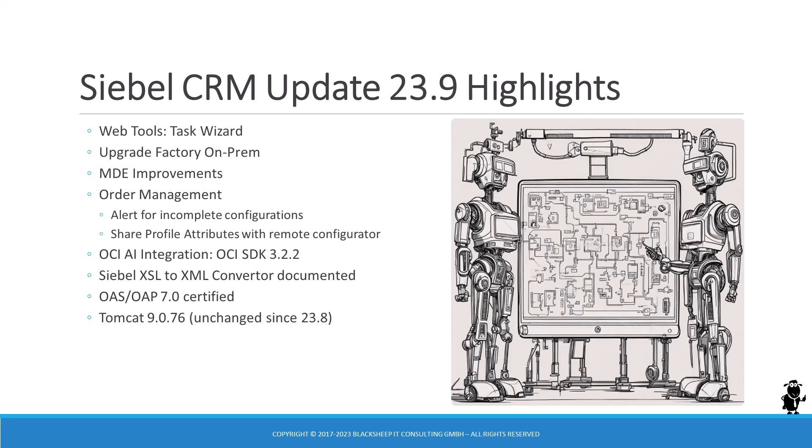Version 7.0 of Oracle Analytics Server, OAS, and the adjacent Oracle Analytics Publisher, OAP, is now officially certified for Siebel 23. The Tomcat version shipped with 23.9 is 9.0.76, so no change since 23.8. That's a lot to discuss — so let's dig in.